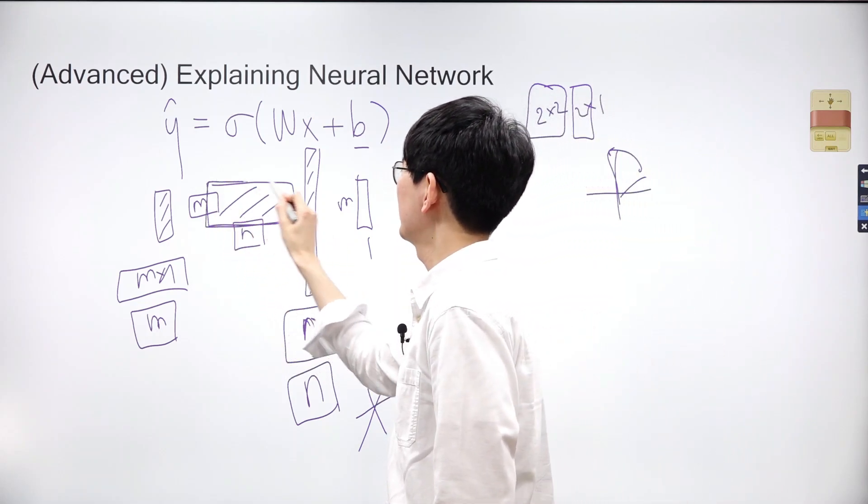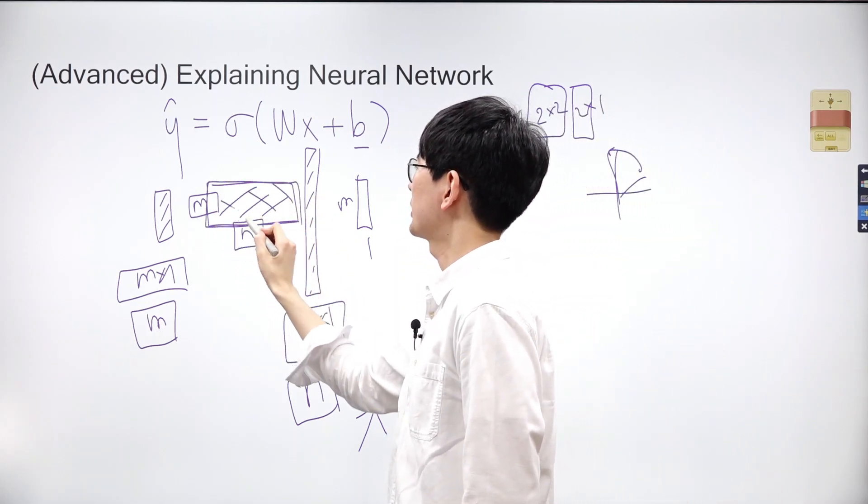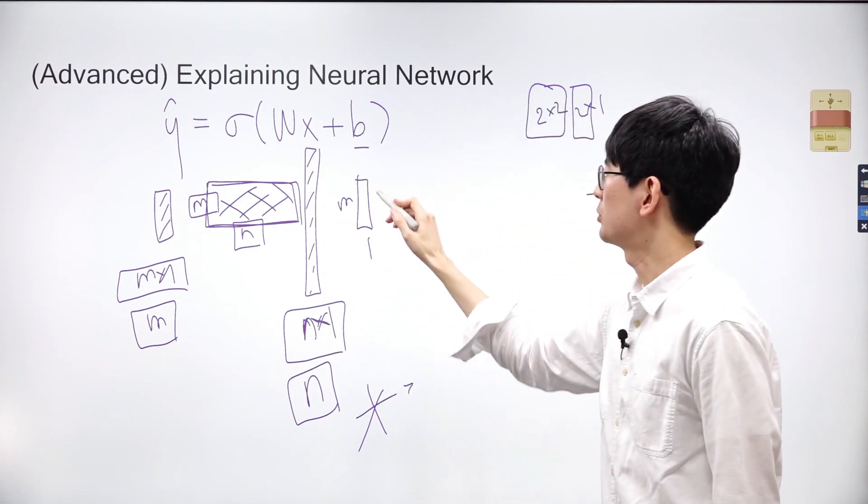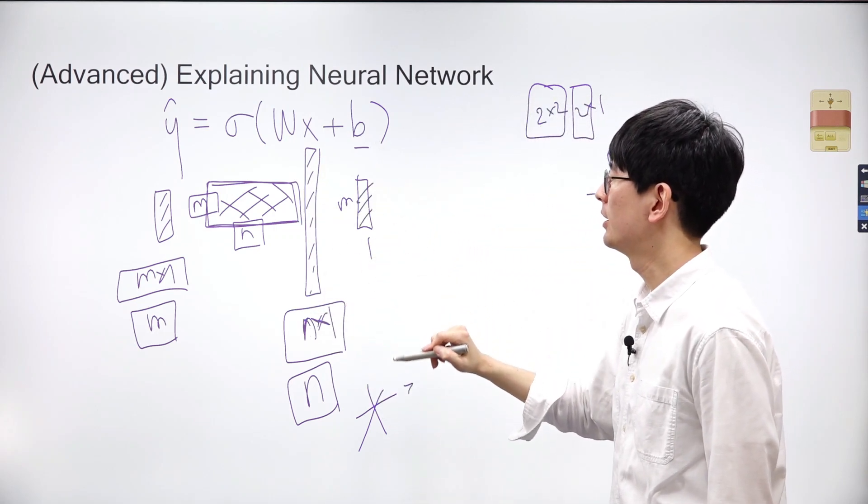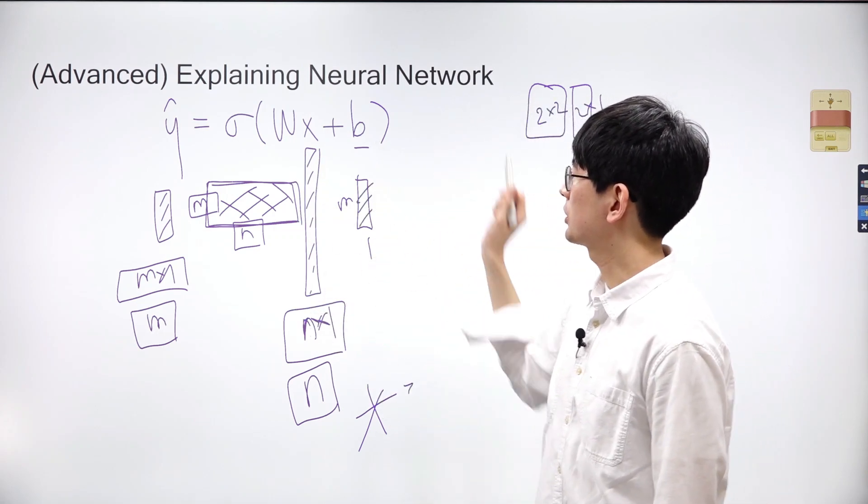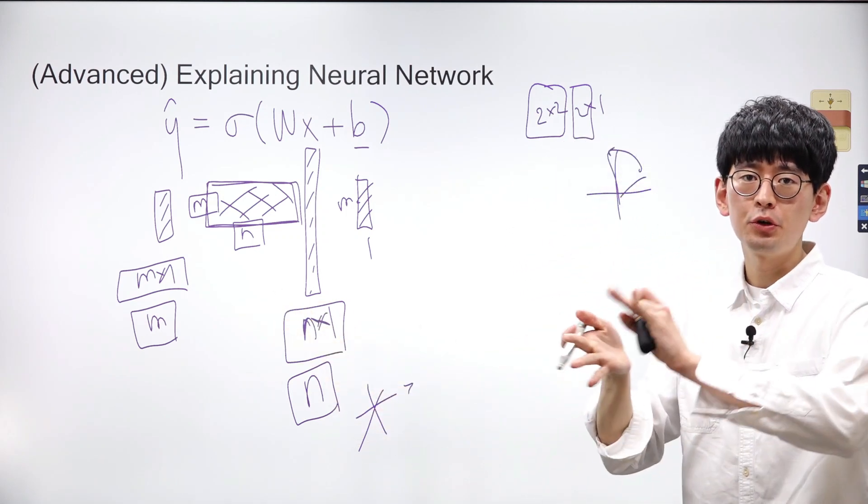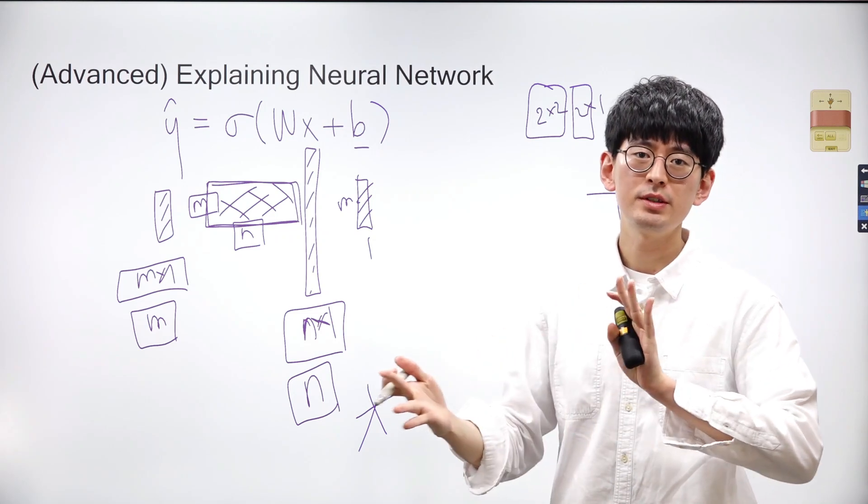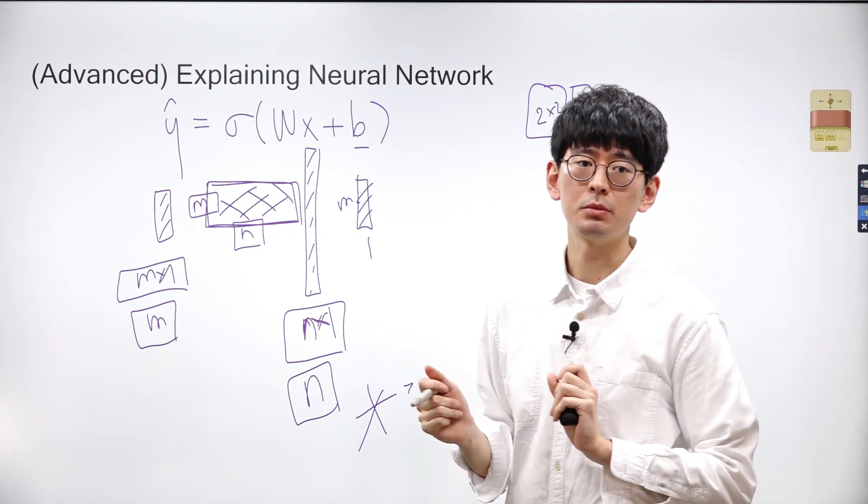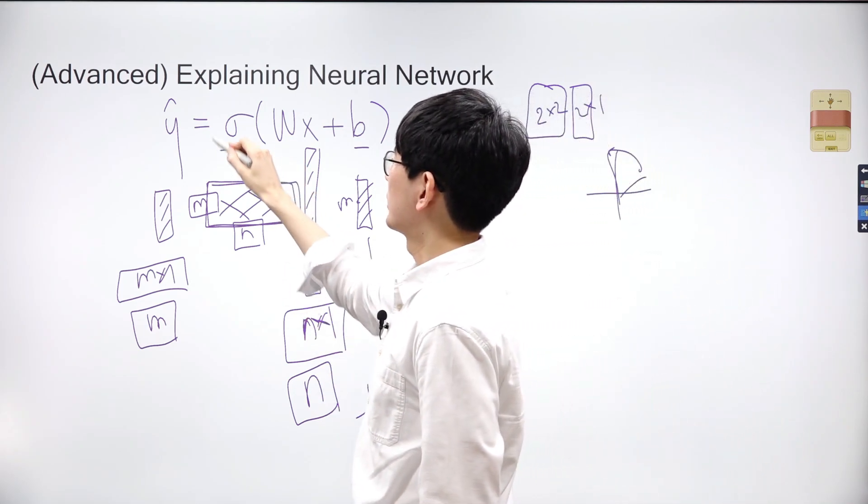Thus, the weights matrix W not only distorts the original coordinate space, but also reduces its dimensionality. Stated differently, you can also decrease the dimensionality of a space through a matrix-vector multiplication when the number of columns of the matrix is larger than the number of rows.